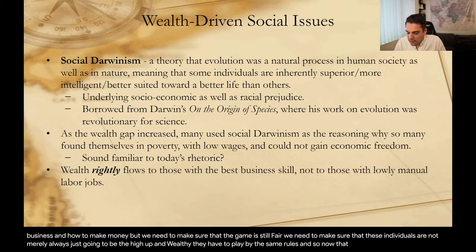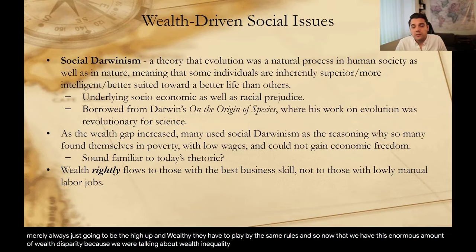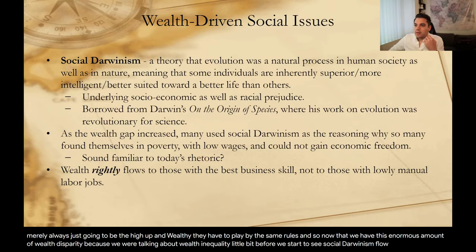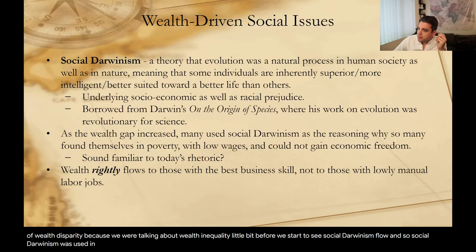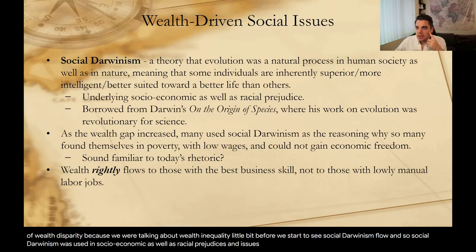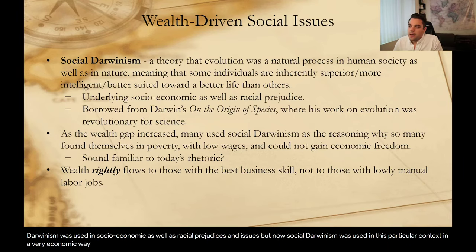Now that we have this enormous wealth disparity, we start to see Social Darwinism flow. Social Darwinism was used in socioeconomic as well as racial prejudices and issues. In this particular context, Social Darwinism was used in a very economic way. It is a theory drawing from Darwin's own theories.